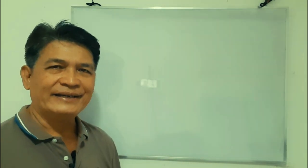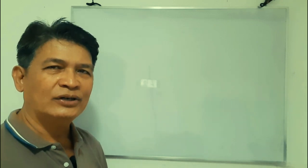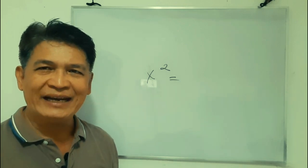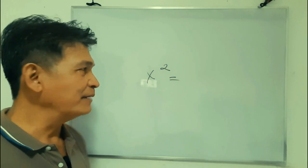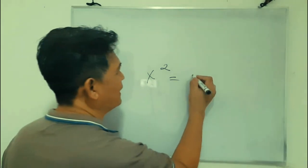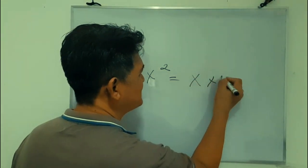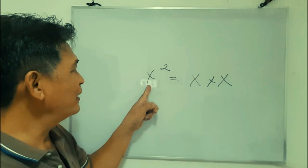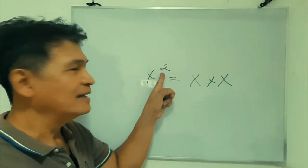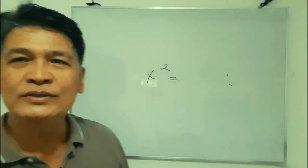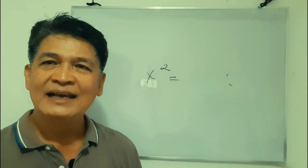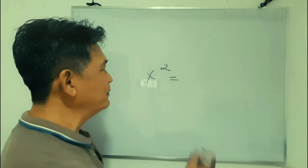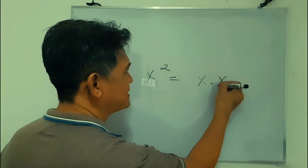Also in algebra, the letter x is commonly used as an unknown or a variable. We do not use the multiplication sign x as a symbol of operation in algebra. Because if you are going to multiply x times x, you would have three x's already — that means x times x times x — whereas x squared means you multiply x twice only. So instead, we use the period as a multiplication symbol, so that becomes x times x.